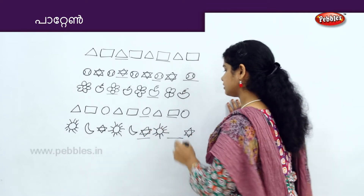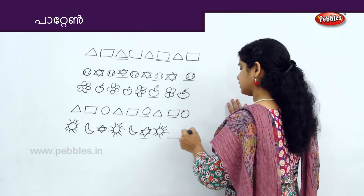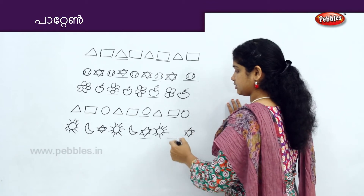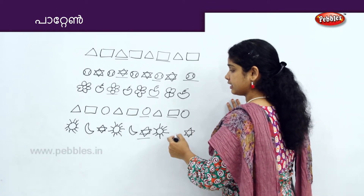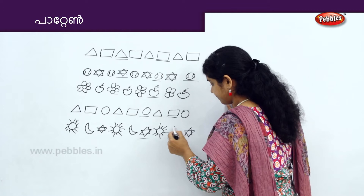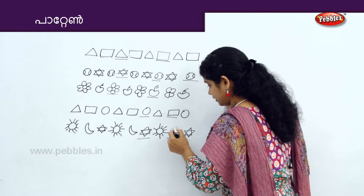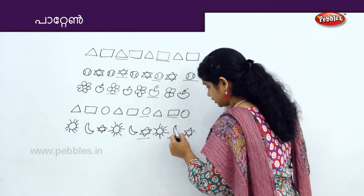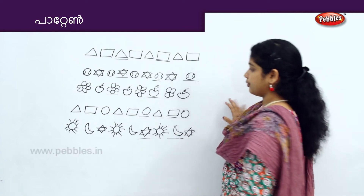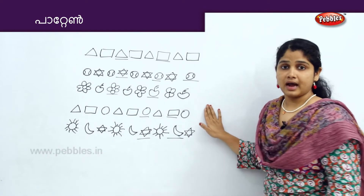If we take a look, Suryan. We are dashed here. Here we are Nakshatram. Now what is Chandran? Very good. Then we have Chandran. So here we have a pattern.